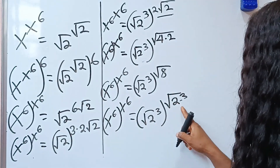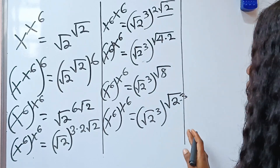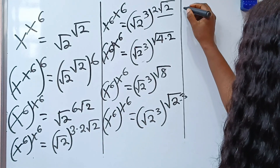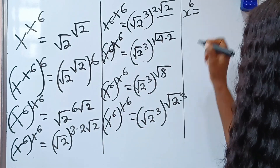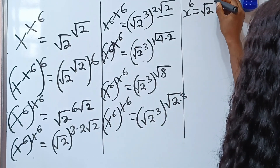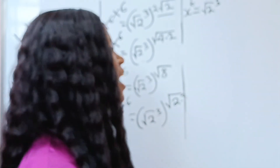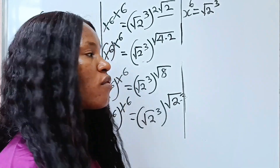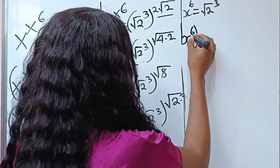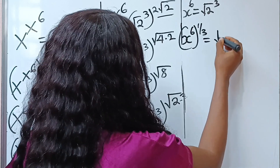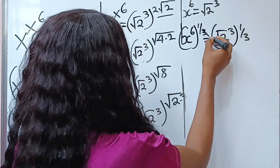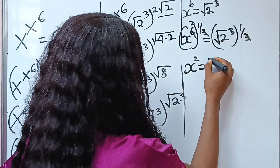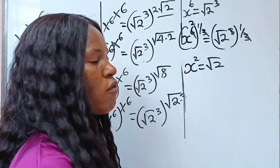We can see we have the same thing on both sides, so by comparison we equate: x to the power of 6 equals square root of 2 to the power of 3. Now I want to remove the exponent 3, so I raise each side of this equation to the power of one over three. We have x to the power of 6 raised to the power of one-third, equal to square root of 2 to the power of 3, raised to the power of one-third. The 3 and one-third cancel, giving us x to the power of 2 equals square root of 2.